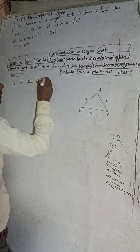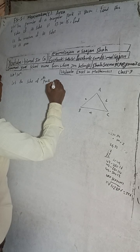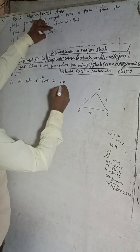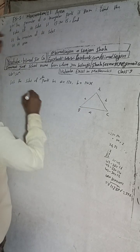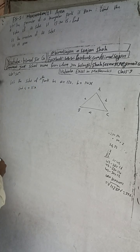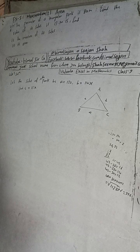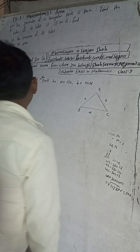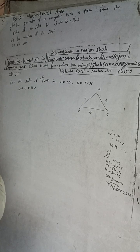Let the sides of the park — the triangular shaped park — be: a = 13x, b = 14x, and c = 15x. Now, we are given the perimeter, so let's use that.